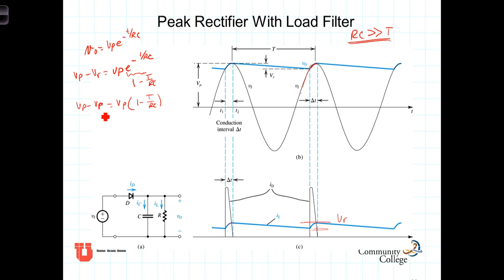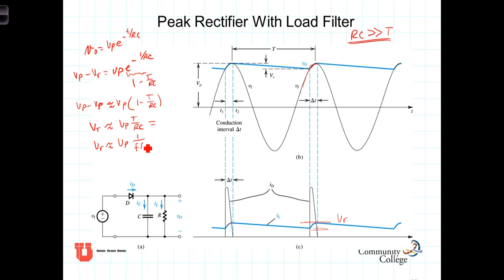Solving this expression for V sub R, and noting that we're using a Taylor series approximation, we get that V sub R is approximately equal to V sub P times T over RC. Since T is the period of the source, 1 over T is the frequency, and we can rewrite this as: the ripple voltage is approximately equal to V sub P times 1 over (F times R times C). The ripple voltage can be reduced by increasing the frequency so there's less time to discharge, increasing the resistor, or increasing the capacitor so that the time constant of the circuit is longer.